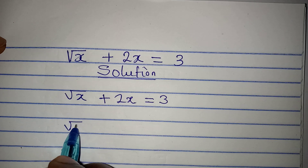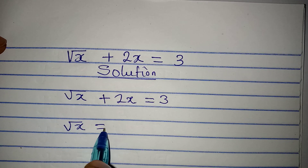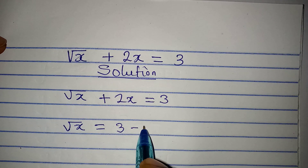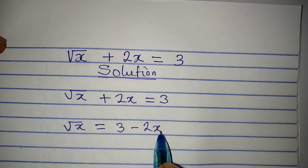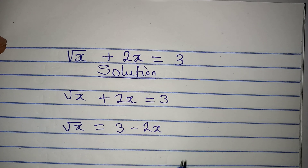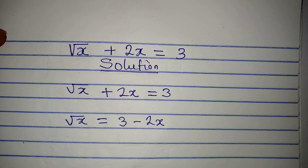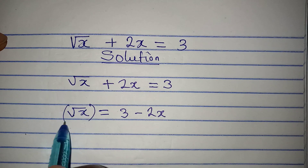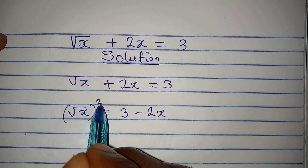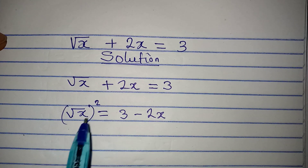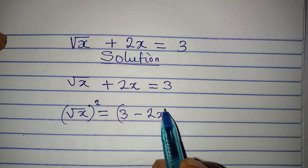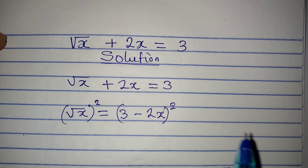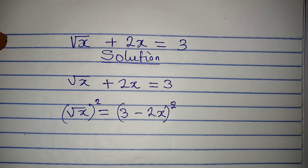So we have square root of x equal to 3 minus 2x. The next thing we do is to remove this square root by squaring both sides — we are going to square this as a term.